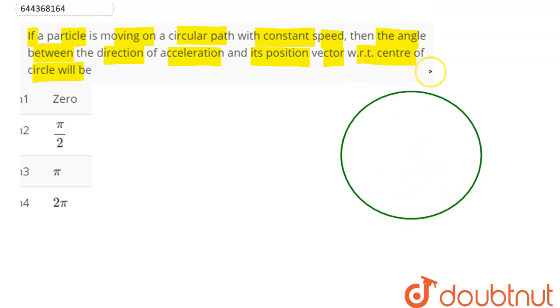This is our particle moving in a circular path with constant speed V. So velocity will always be tangent.